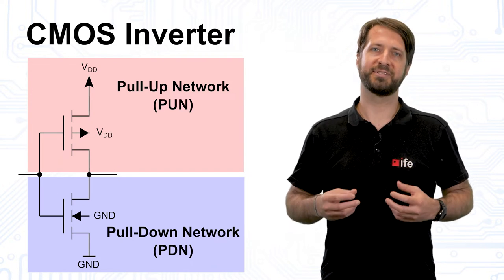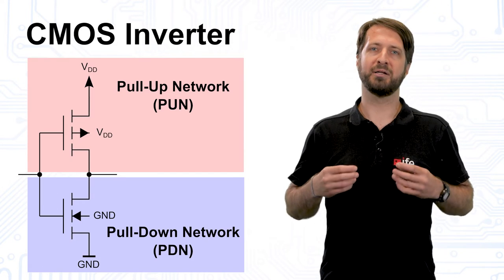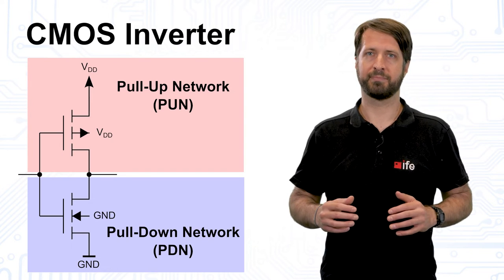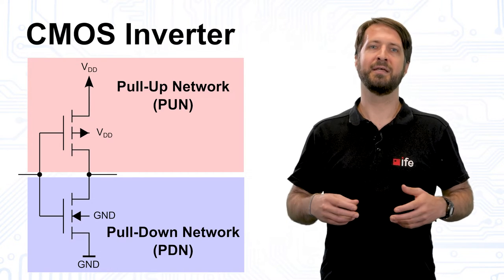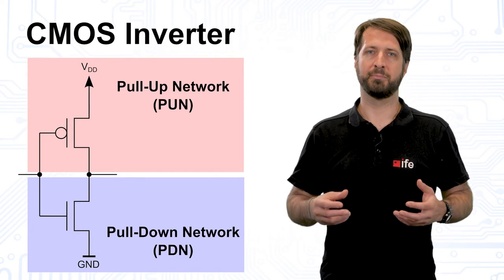Conversely, the NMOS transistors are always in the pull-down network, since their bulk connection must be connected to the ground potential. Since this is almost always the case, we can again use the simpler MOSFET symbols.